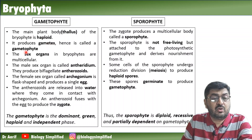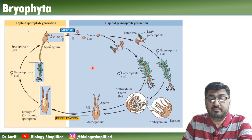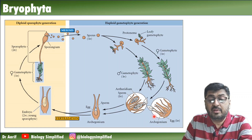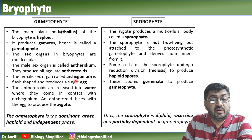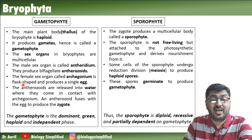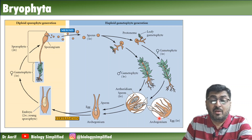The gametophyte produces gametes, hence it is called a gametophyte. The sex organs in bryophytes are multicellular. The male sex organ is called the antheridium. The female sex organ is called the archegonium. The antheridium will produce biflagellate antherozoids with two flagella. The archegonium is flask-shaped, producing a single egg.